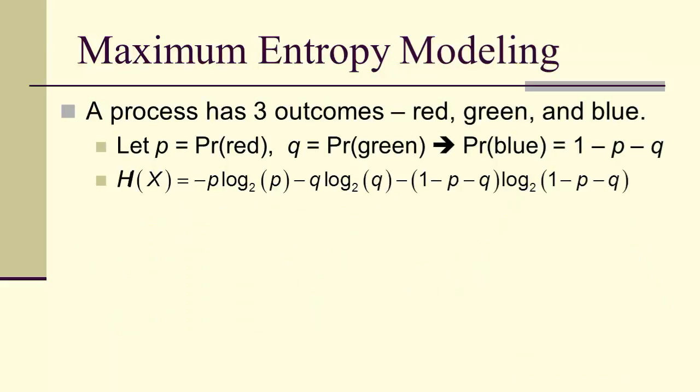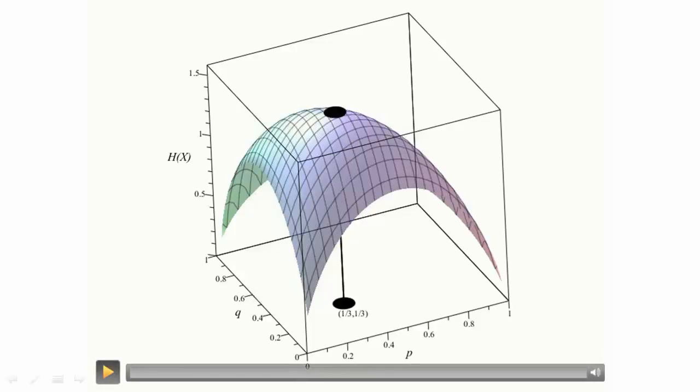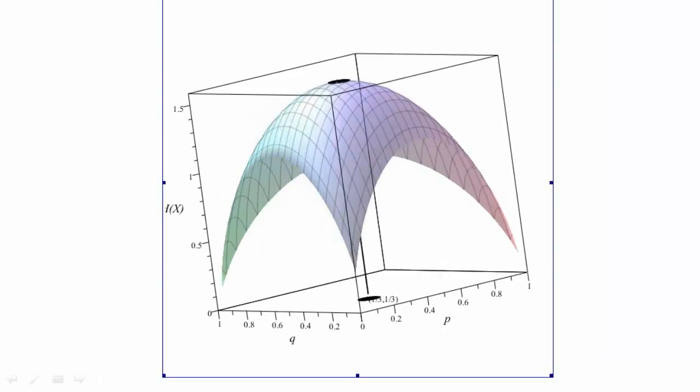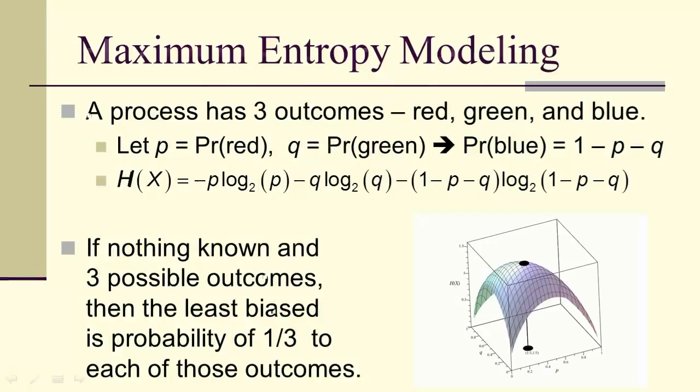If we have three outcomes, and we're going to say these three outcomes are red, green, and blue. Then p is the probability of red, q is the probability of green. So the probability of blue is 1 minus p minus q. And that gives us an entropy of negative p log base two of p minus q log base two of q minus (1-p-q) log base two of (1-p-q). And here we can actually see the surface that corresponds to that entropy. And you can see that it has a maximum at p equals one third and q equals one third.